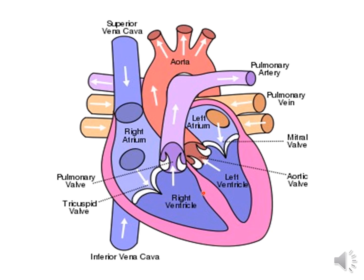The four chambers of the heart are the right atrium, right ventricle, left ventricle, and left atrium. The pulmonary artery originates from the right ventricle and the aorta originates from the left ventricle. The superior vena cava and inferior vena cava empty into the right atrium, and the pulmonary vein empties into the left atrium.